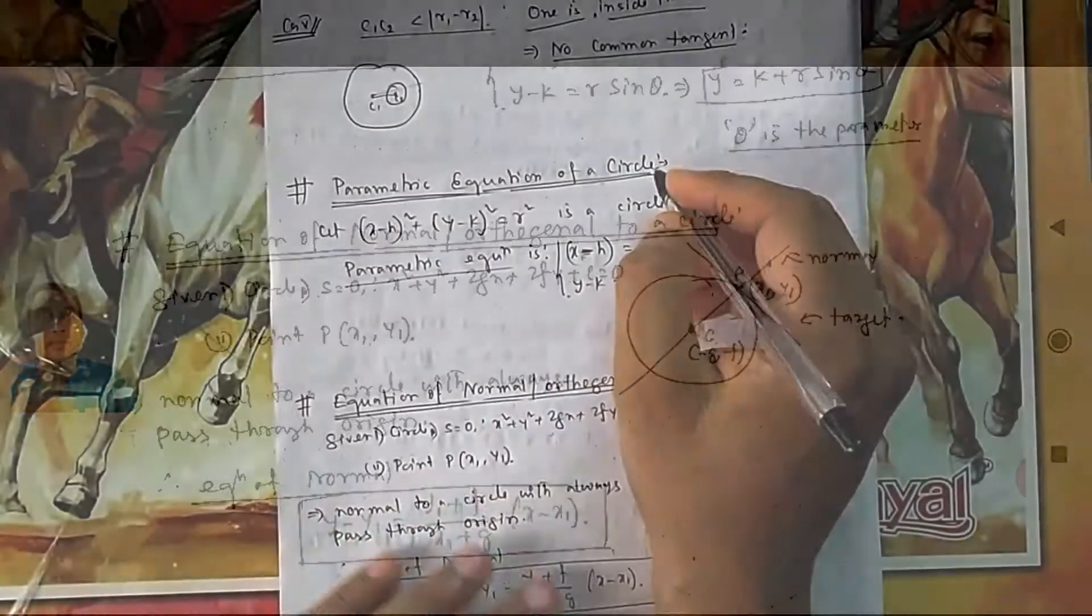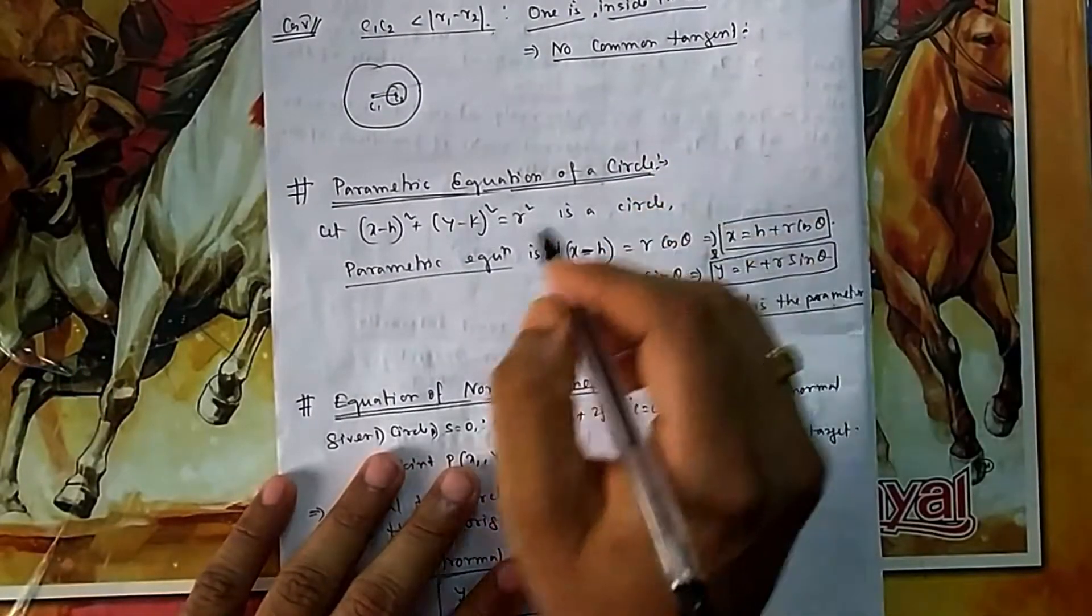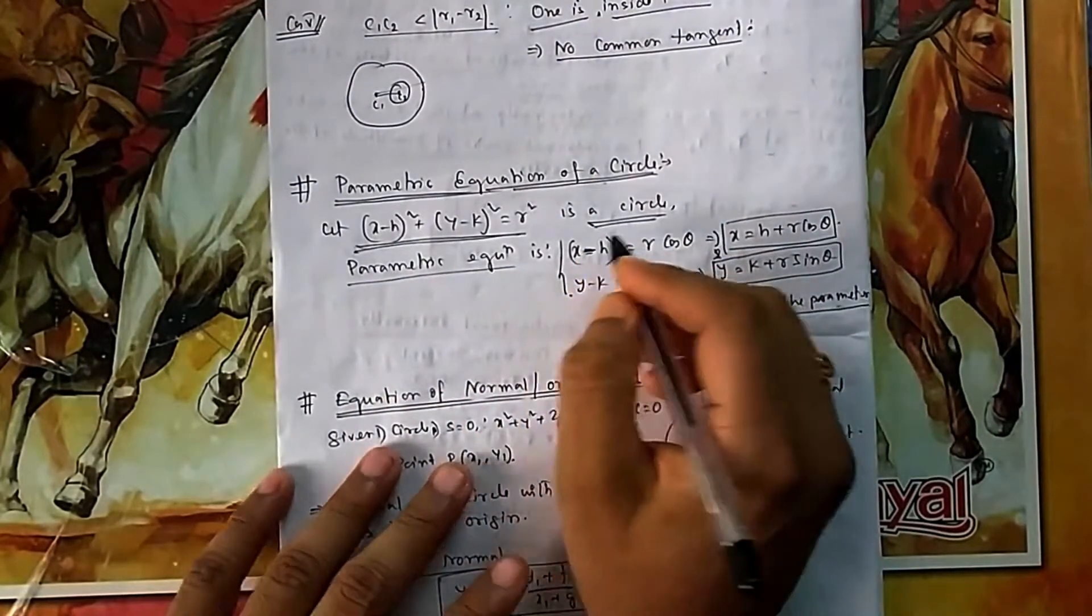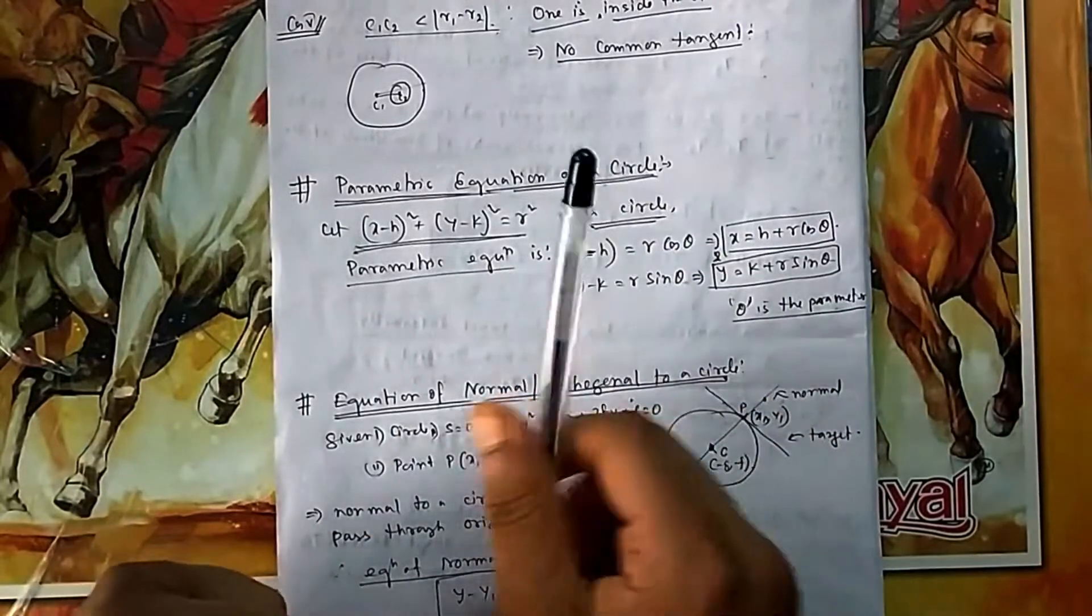If you want to find the parametric equation of a circle, suppose the circle equation that I have considered is the standard equation: (x-h)² + (y-k)² = r². This is a circle. Now what is parametric form? Parametric form means instead of having two variables, we should write it in a single variable.